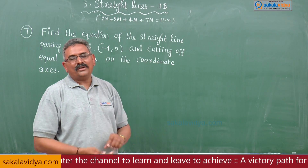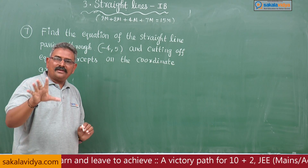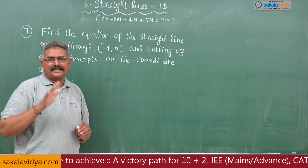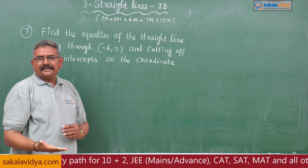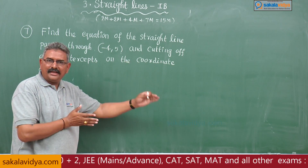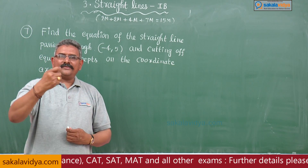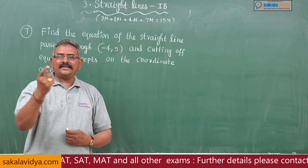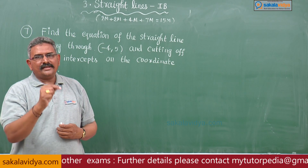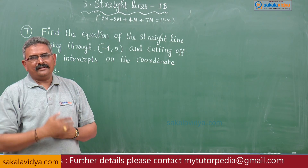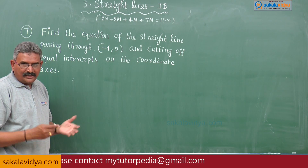So how to follow the process? Making equal intercepts on both coordinate axes means let the intercepts be a on the x-axis and a on the y-axis. Then the equation of the line in intercept form is x by a plus y by b equals 1. So, x by a plus y by a equals 1, giving us x plus y equals a — say equation 1. It passes through the point minus 4 comma 5.